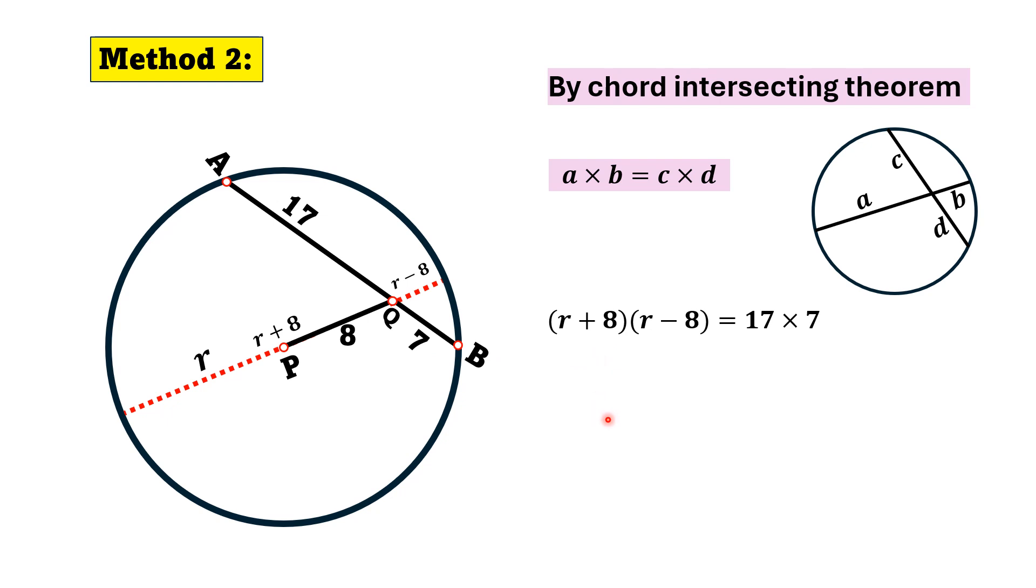So the left side will become R square minus 64, and the right side will be 119. On the left we have used the famous identity of A plus B times A minus B, that is equal to A square minus B square.